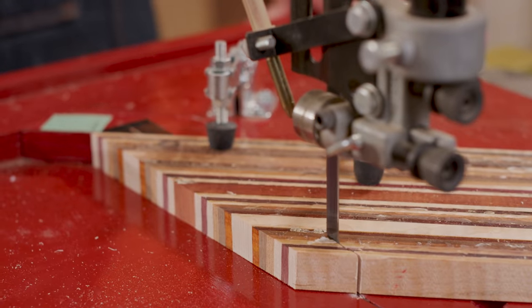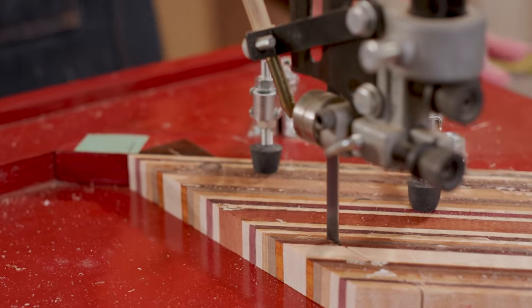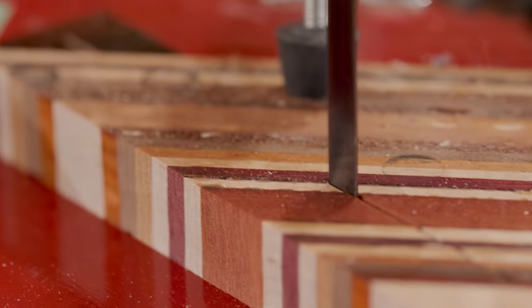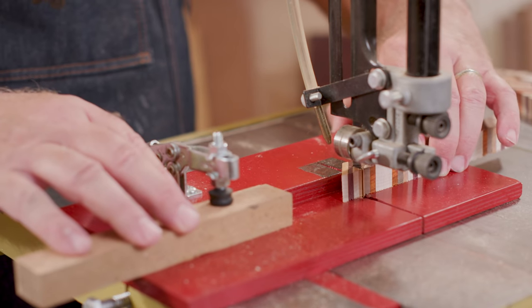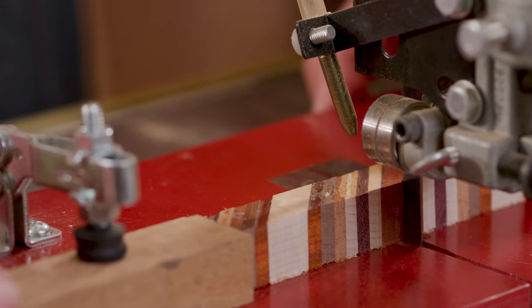Using a band saw, miter saw, or a sled at the table saw, cross cut 3 quarter inch wide strips from the lamination at 45 degrees. Then trim the ends of the laminated blanks square and to length.